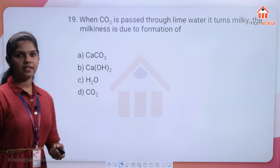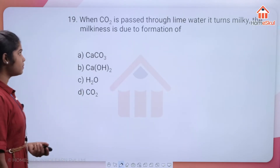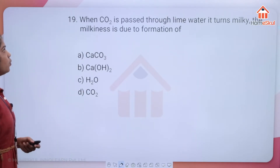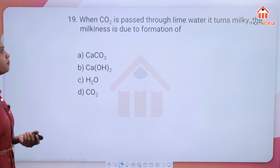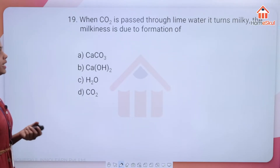Question 19: when carbon dioxide is passed through lime water, it turns milky. The milkiness is due to the formation of which compound?